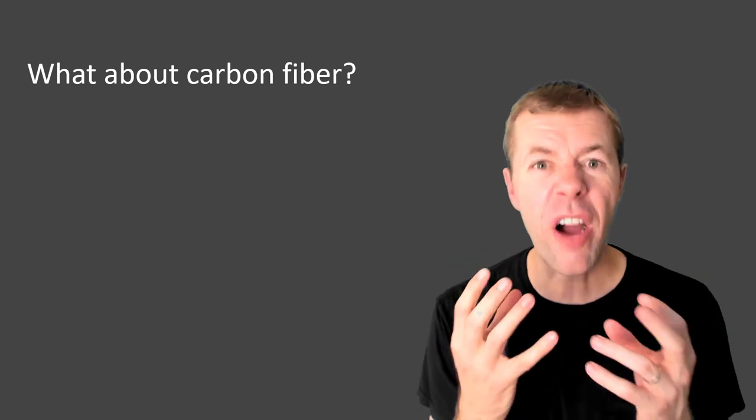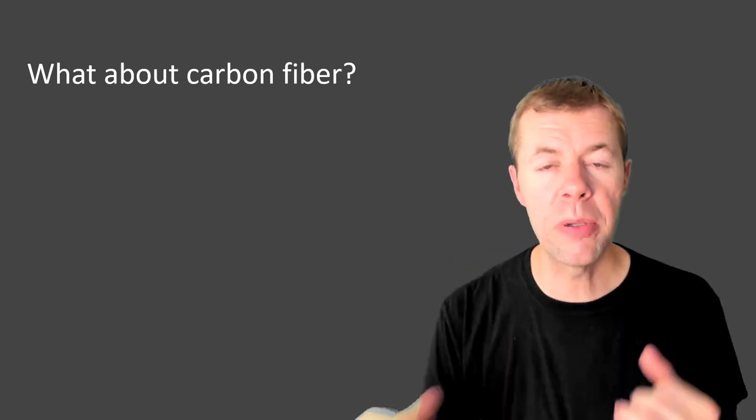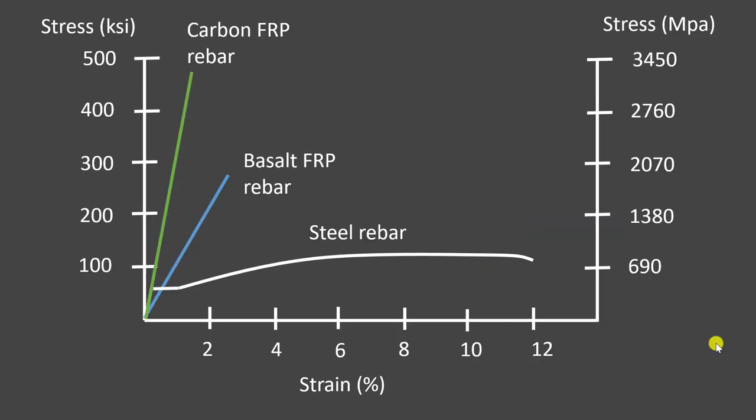Now, how about carbon fiber? Isn't it different than basalt? Well, it sure is. Let's look at a stress strain diagram for a carbon FRP rebar. Notice at first, look at the slope. It's the same as steel rebar. And look how much stronger it is. Now, it doesn't have as much ductility. It's a lot lower, but look at that super high strength. There's a lot of benefit there.